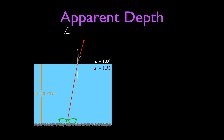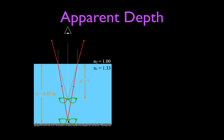We need a second light ray to locate the apparent depth. It does the same thing — it's refracted away from the normal line, with the angle of refraction greater than the angle of incidence because this index is less than the other. Your eyes see those light rays coming toward you, but your brain doesn't know the light was bent at the surface. It assumes the rays traveled in a straight line, follows them back, and where those two rays meet is where your sunglasses appear to be — that is d-prime, the apparent depth, which is less than the actual depth.